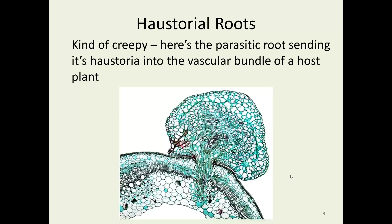This is a cross-section from a microscope slide showing a haustorial root going into the vascular tissue of the host plant. You can see the vascular bundle down here. This little blobby thing up here is the root, and it has sent tissue down into the plant, tapping into that xylem and phloem to get its nutrients. Sort of creepy.